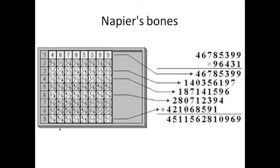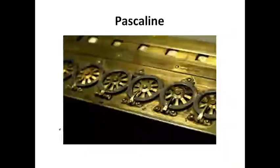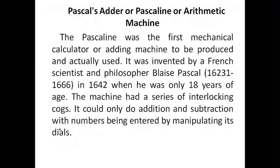After Napier's Bones, the next device was the Pascal Machine, also called the arithmetic machine or Pascal Adder, or Pascaline. In 1642, Blaise Pascal developed this mechanical device. It was in the form of a rectangular box with wheels inside.